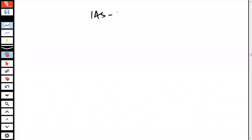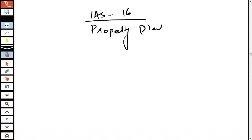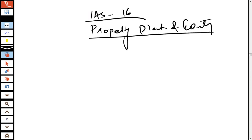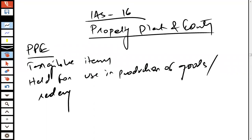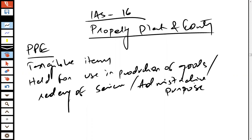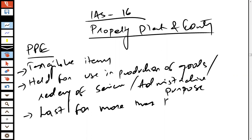The next accounting standard I will discuss is IAS 16, which is property, plant and equipment. Property, plant and equipment are the tangible items which are held for use in production of goods, for rendering of services, or for administrative purposes. They are expected to last for more than 12 months.